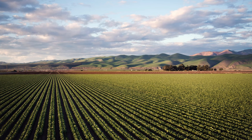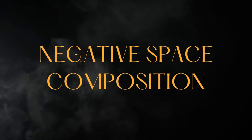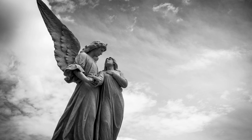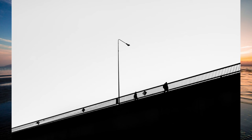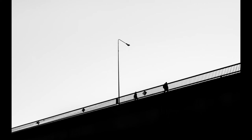Negative space composition in photography is a technique that involves using the empty or negative spaces in a photograph to create a sense of balance and visual interest. It involves composing an image so that the main subject is surrounded by negative space, which helps to draw the viewer's eye towards the subject. One of the most common ways to use negative space is to create simple and minimalist images that feature a single subject surrounded by empty space.